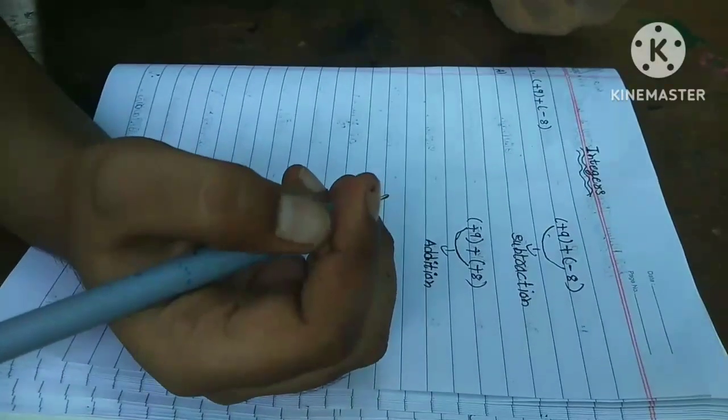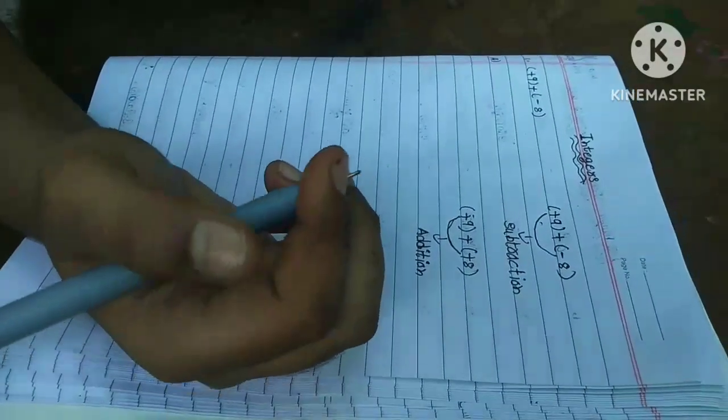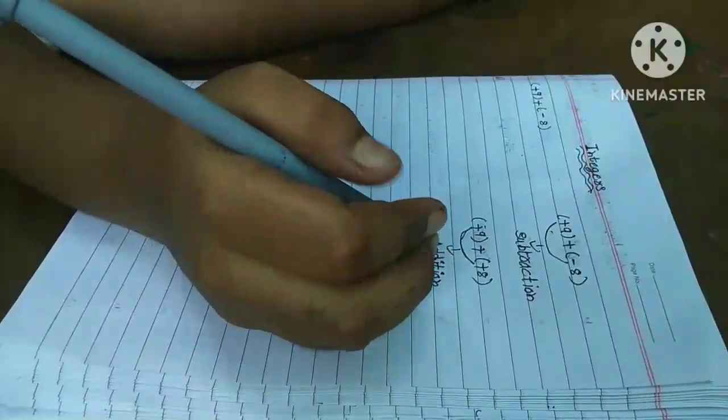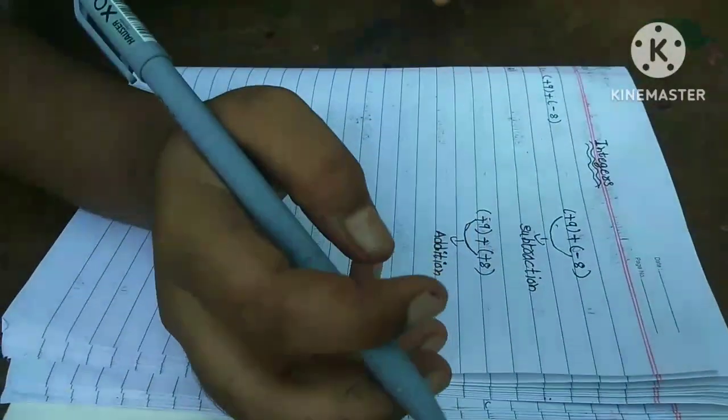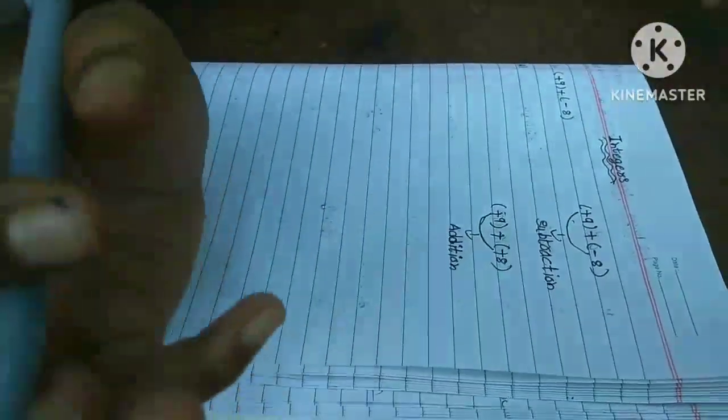Means, neither subtraction sign or addition sign. We want to do addition. Here subtraction came. Here plus came. Also subtraction only. But different signs now. That's why subtraction.